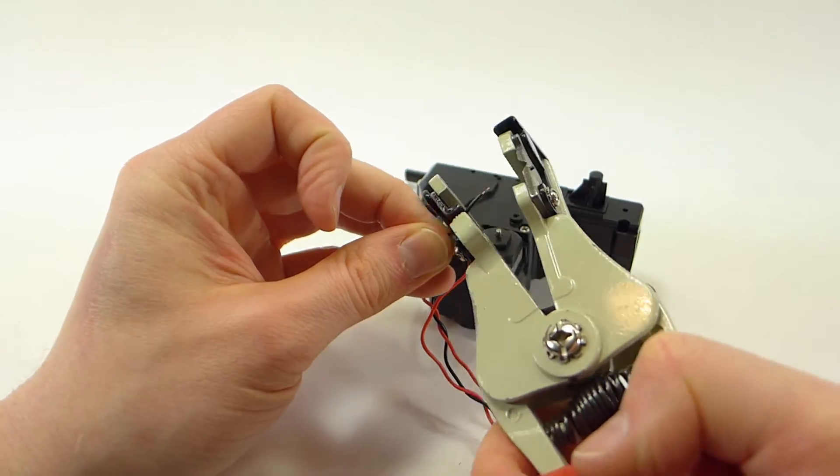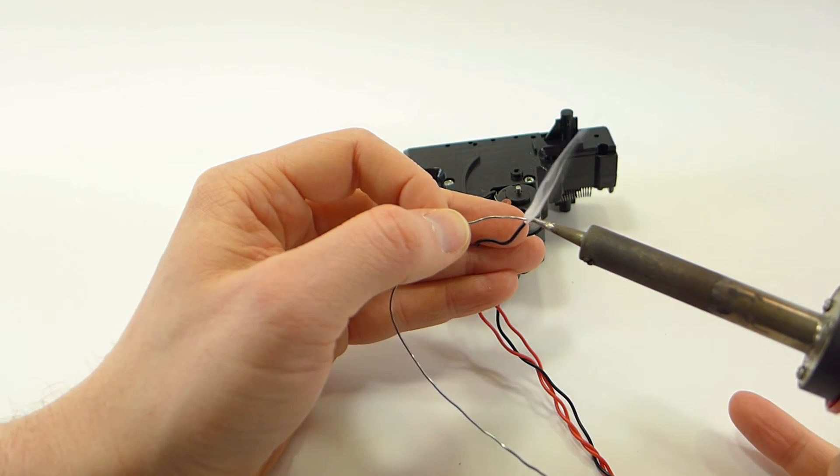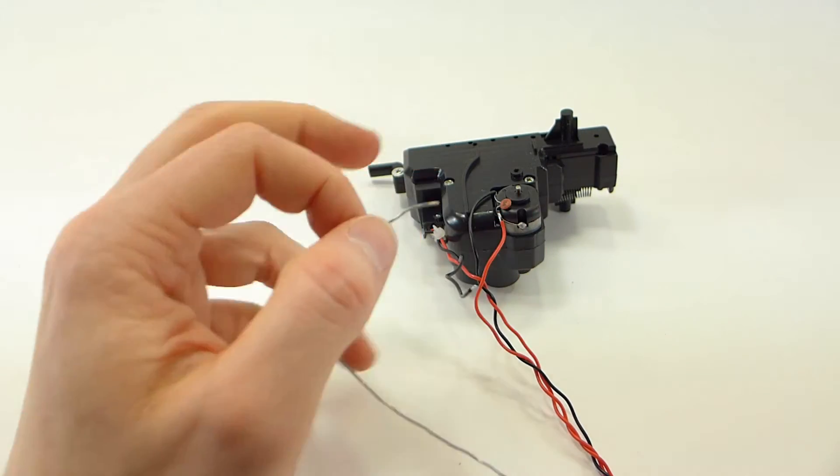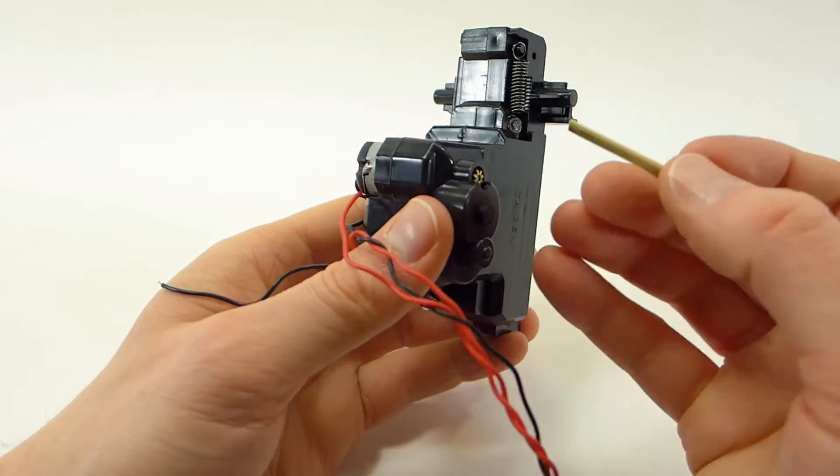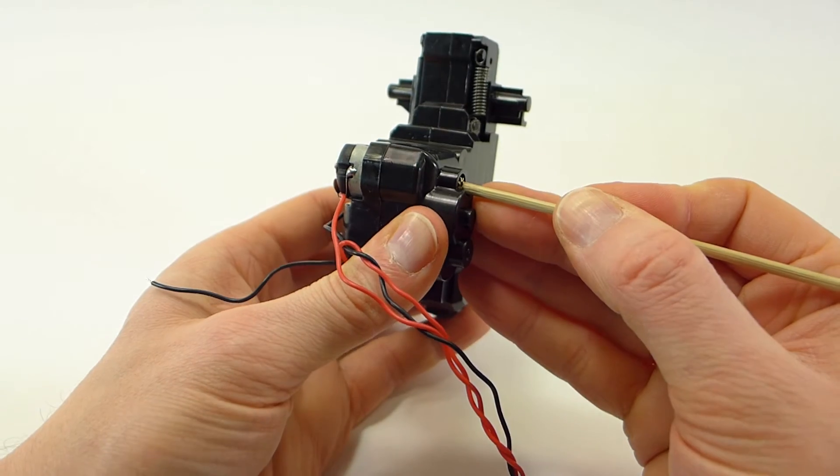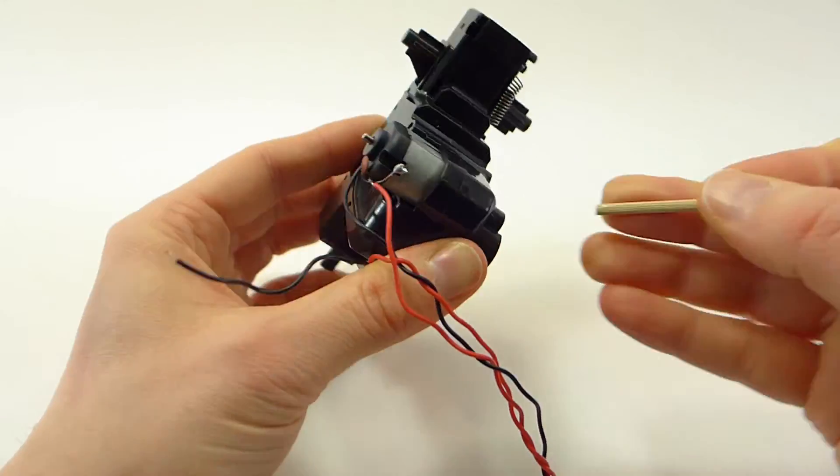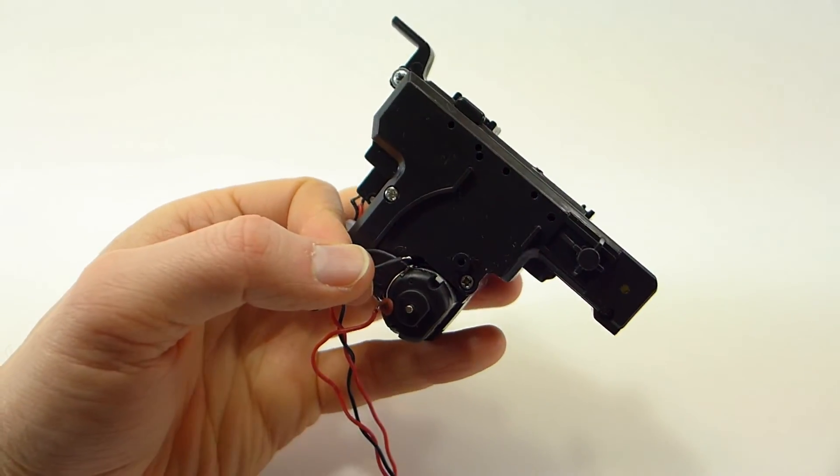Again I have to strip the end and it's always a good idea to tin it. And now because the motor negative terminal is a little hard to reach, we're going to push the motor out a little bit using this stick. You don't need to take the motor all the way out, just push it out a little bit.